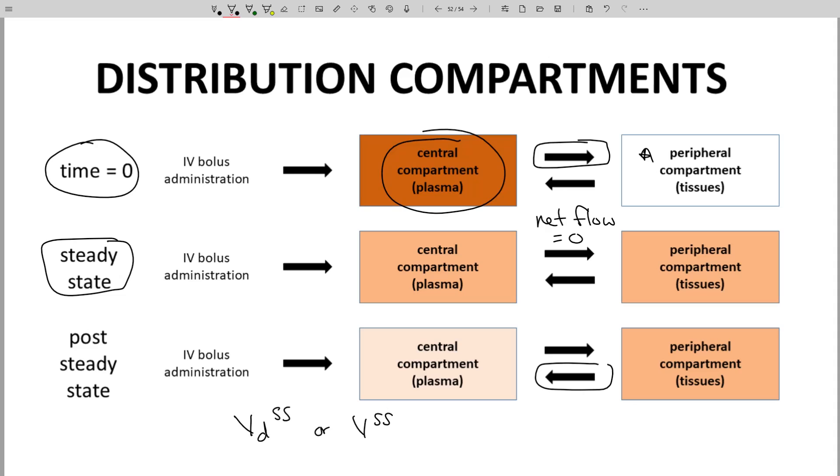Steady state and terminal Vd do differ. VdSS tends to be smaller than terminal Vd because at steady state, the molecule has not yet fully permeated all tissues.